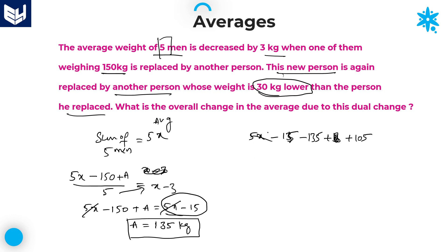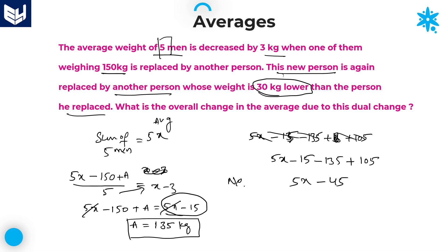This is the new total sum. After the first replacement the sum was 5x minus 15. Now A is replaced with a new person: the new person's weight is 105 and 105 minus 135 gives minus 30. So the total becomes 5x minus 150 plus 105, which equals 5x minus 45. The new sum is equal to 5x minus 45.